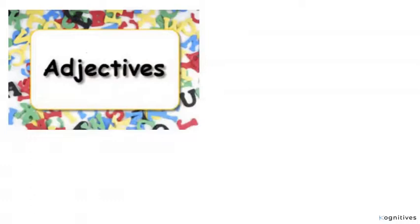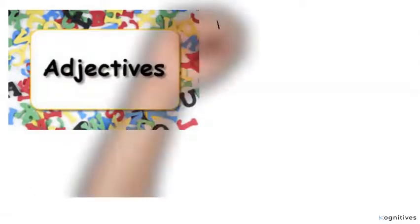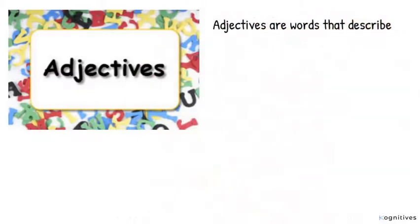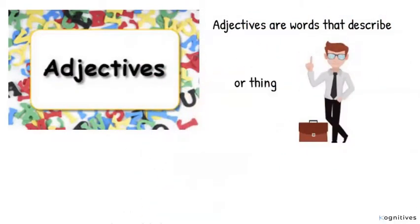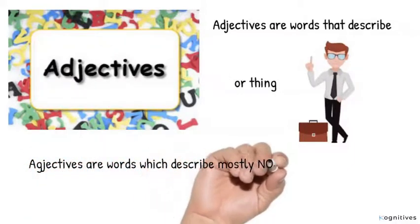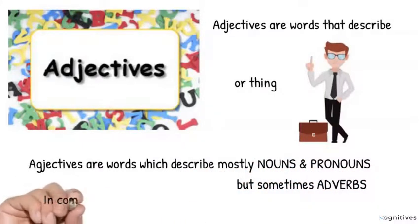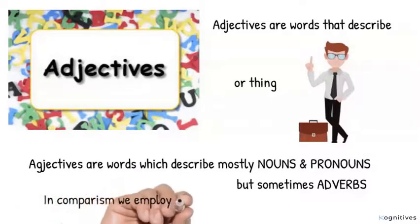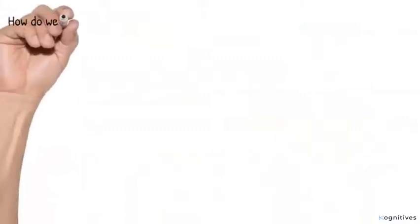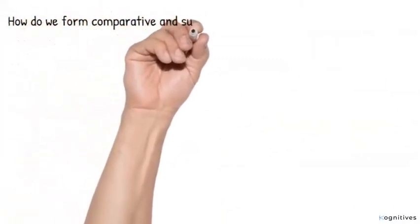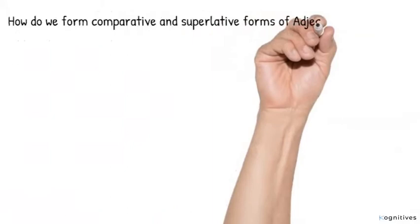Adjectives in English. Now what is an adjective? Adjectives are words that describe a person or thing. Adjectives are words which describe mostly nouns and pronouns but sometimes adverbs. In comparison, we employ adjectives.